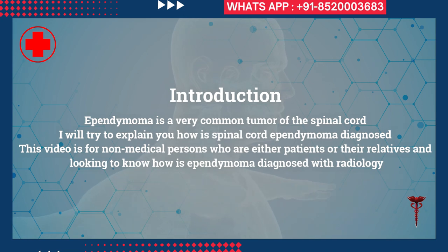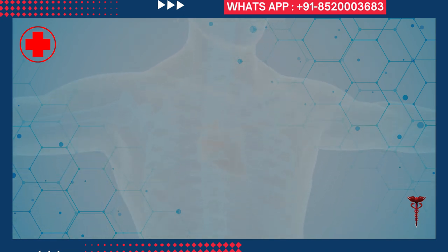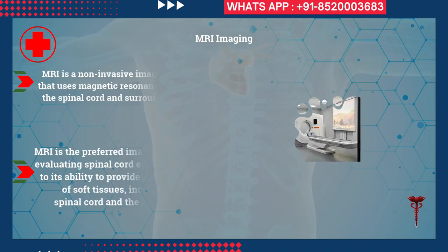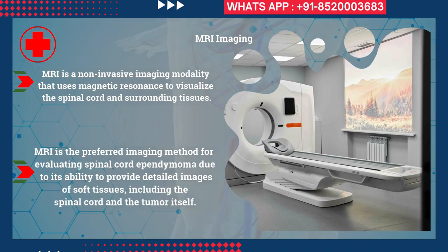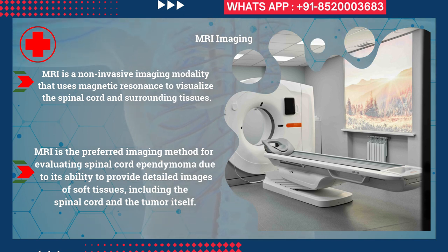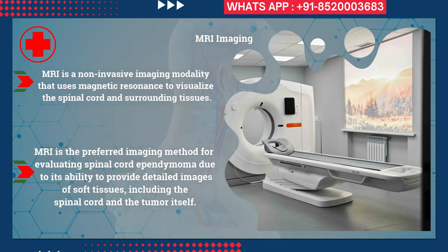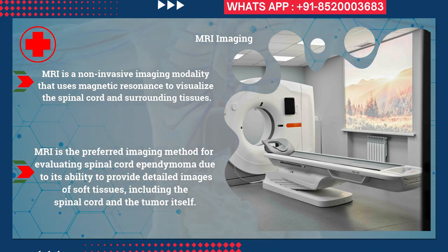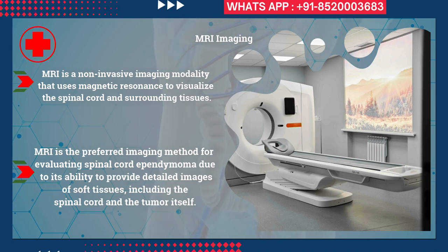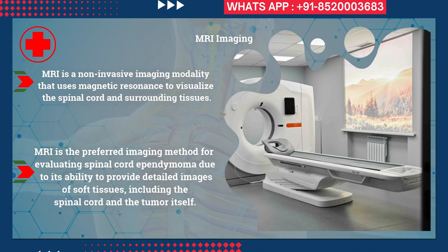Ependymoma is diagnosed with radiology. MRI — magnetic resonance imaging — is the preferred method for evaluation of spinal cord ependymoma. MRI is preferred because of its ability to provide detailed imaging of soft tissues, giving a very clear image of the tumor, the spinal cord, and its relation to other soft tissues like the muscles and the laminae.